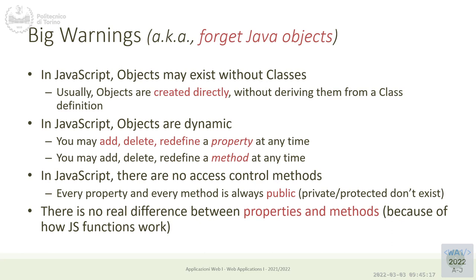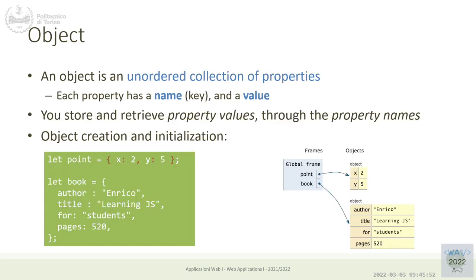We can also define methods over objects. Depending on how functions work in JavaScript, methods are no different from properties — but let's keep that for later. There are no access control modifiers: no public, private, or protected. All properties of an object can be read, modified, and deleted by any code. We have to relearn a much simpler conceptual model of how objects work.